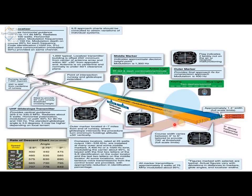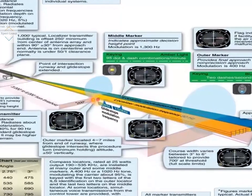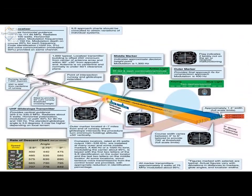There is the outer marker beacon, the middle marker beacon, and the inner marker beacon. When an approaching aircraft crosses the outer marker beacon, it indicates the aircraft is 4 to 7 nautical miles away from the runway touchdown point, with a blinking blue light indication in the cockpit. When the aircraft reaches the middle marker beacon, an amber color light indicates a distance of 0.5 to 0.8 nautical miles from the runway threshold. When the aircraft reaches the inner marker beacon, it is installed parallel to the runway touchdown point.